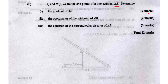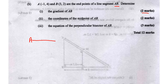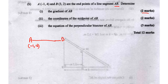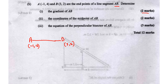For part 1, the gradient of AB — let's draw a little sketch of the line segment. Point A has coordinates negative 1 and 4, and point B has coordinates 3 and 2. Now, I'm hoping you guys know the formula for the gradient of a line.